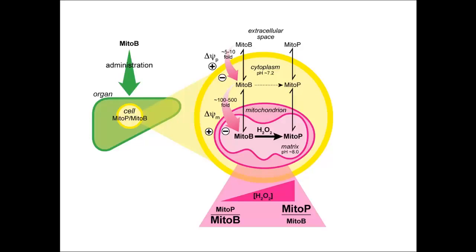MitoB is slowly converted to MitoP by a direct chemical reaction between part of the MitoB molecule and hydrogen peroxide — no enzyme required, and it's relatively slow. Over time, MitoB is gradually converted to MitoP. Both are excreted from the animal over time, so even over several hours the amounts will decrease. However, the ratio increases over time because both are excreted at the same rate. The greater the ratio of MitoP to MitoB, the greater the amount of hydrogen peroxide present inside the mitochondria in the free-living animal. We are integrating the average hydrogen peroxide inside the mitochondria over that period of time.